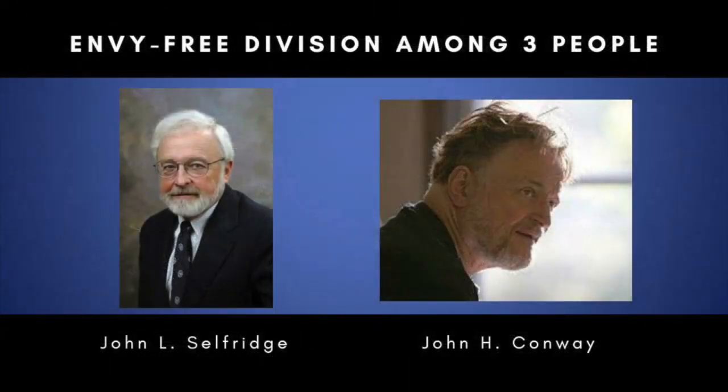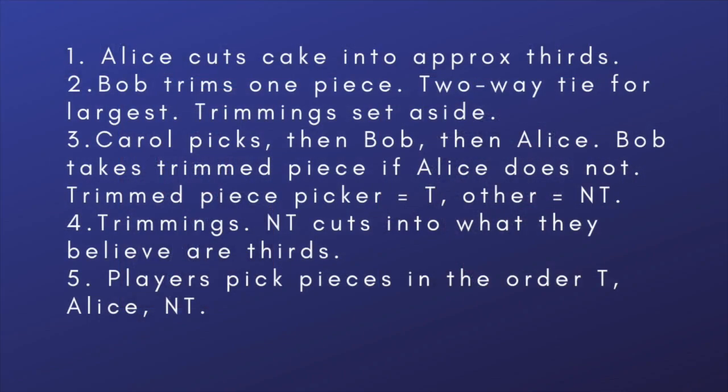A three-person envy-free method was first devised by John Selfridge and John Conway. Suppose the players are called Alice, Bob and Carol. The method goes like this: one, Alice cuts the cake into what she thinks are thirds. Two, Bob trims one piece to create a two-way tie for largest and sets the trimmings aside. Three, Carol picks a piece, then Bob, then Alice.